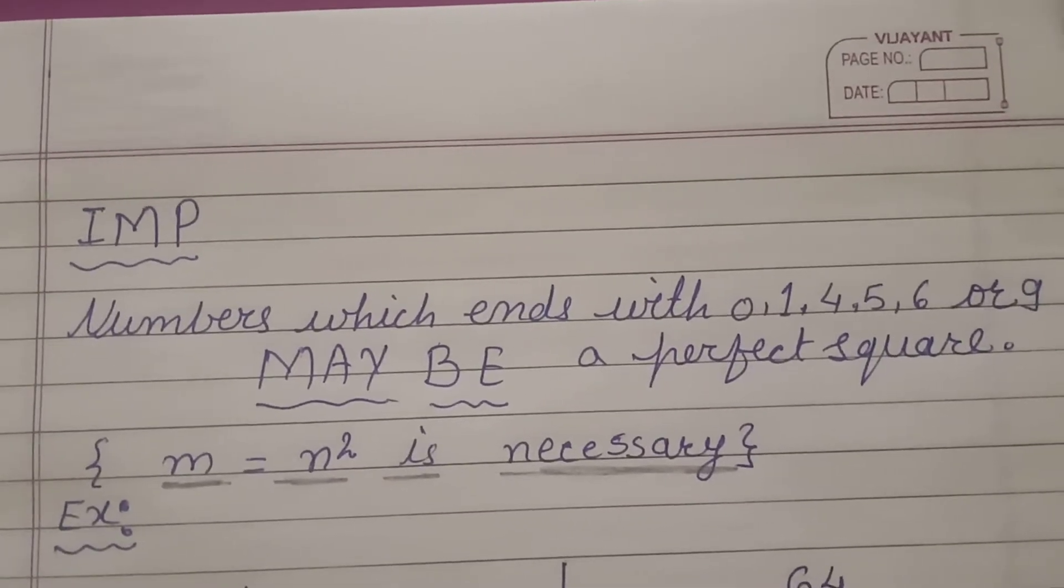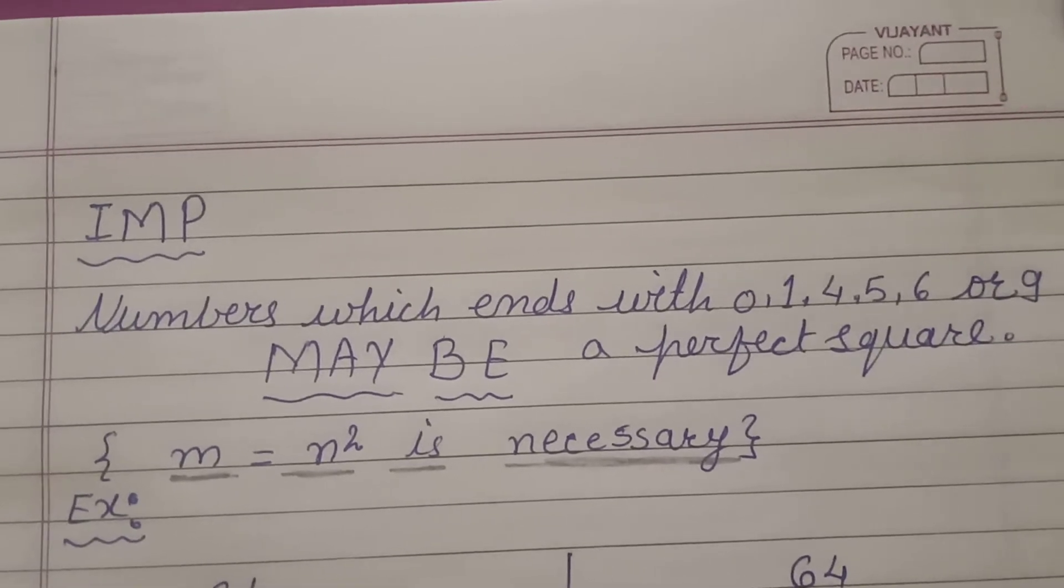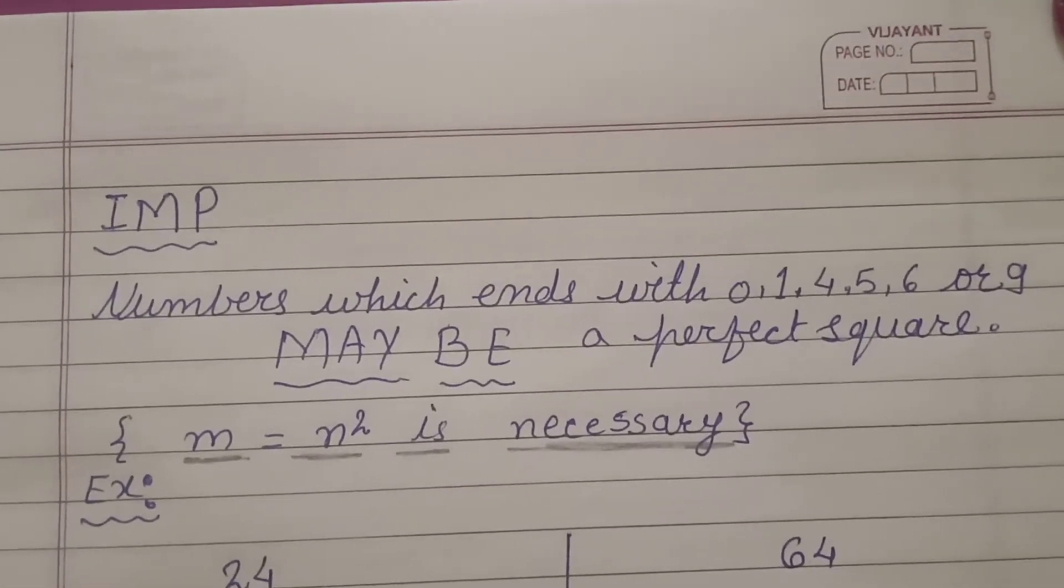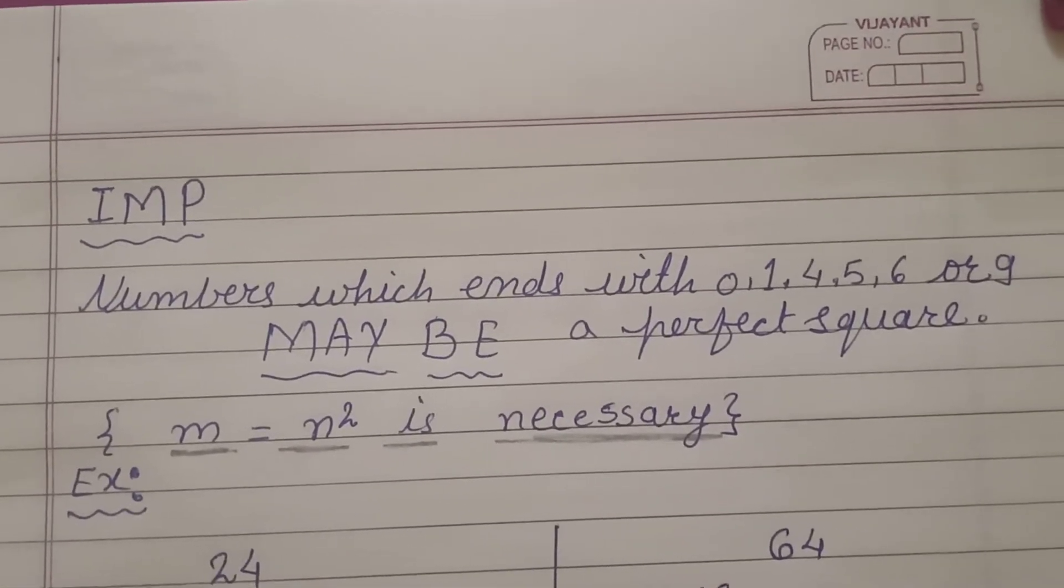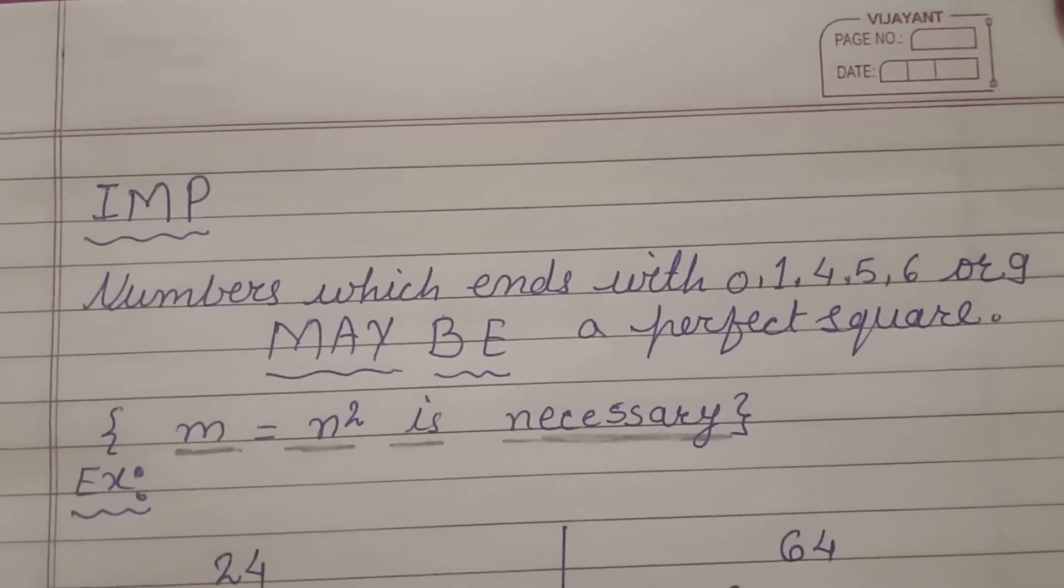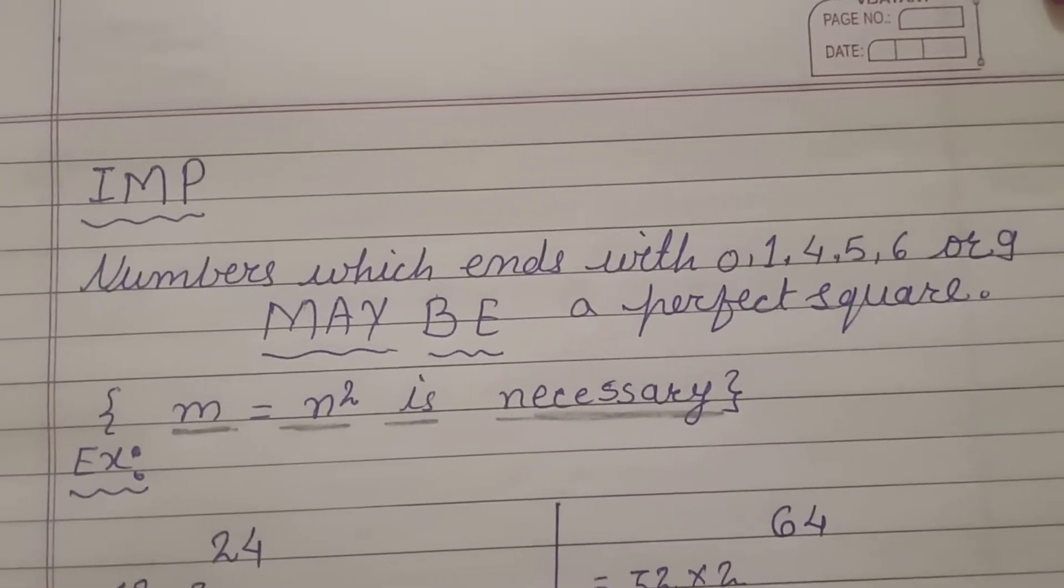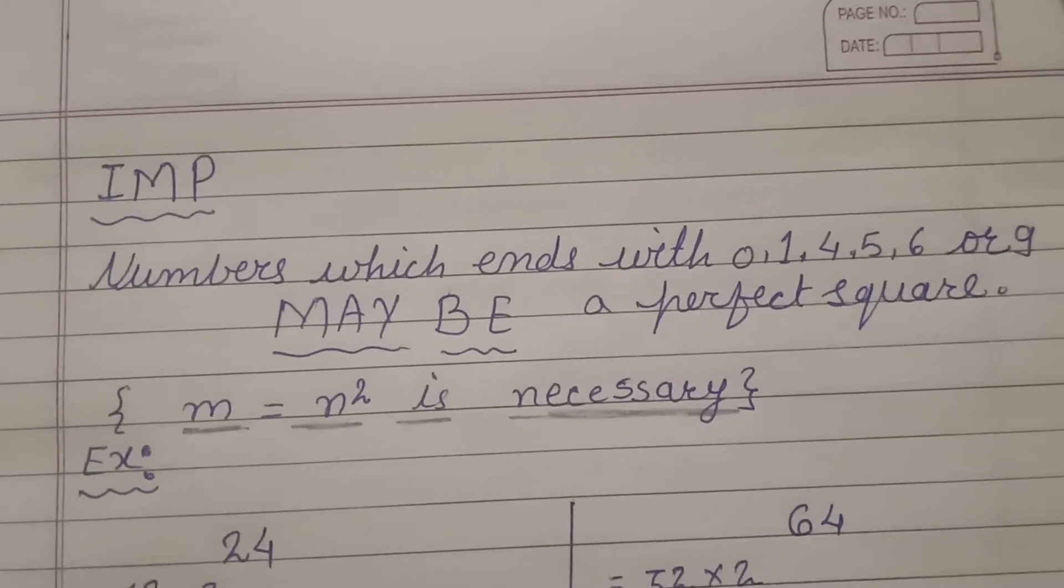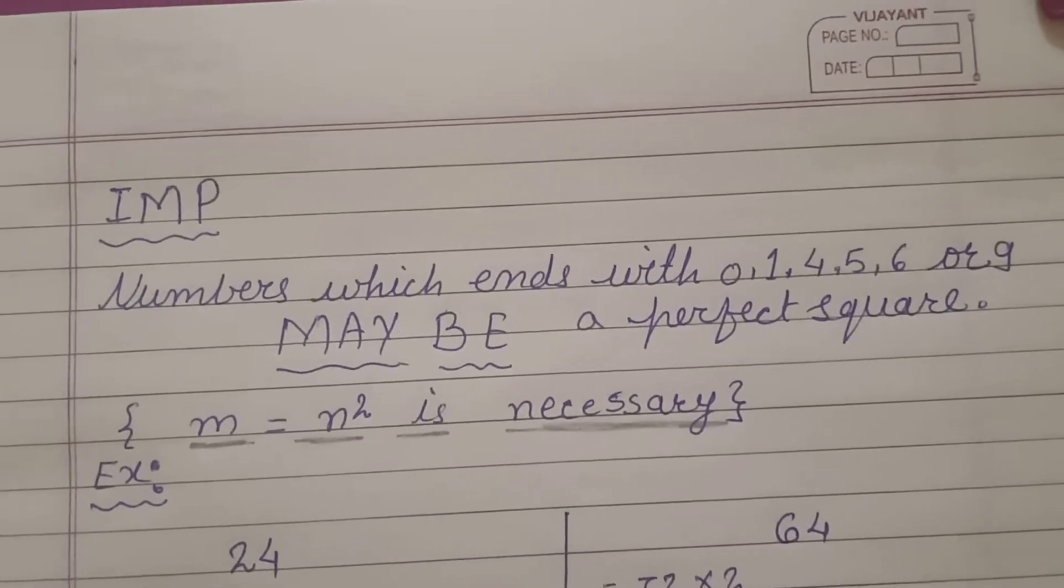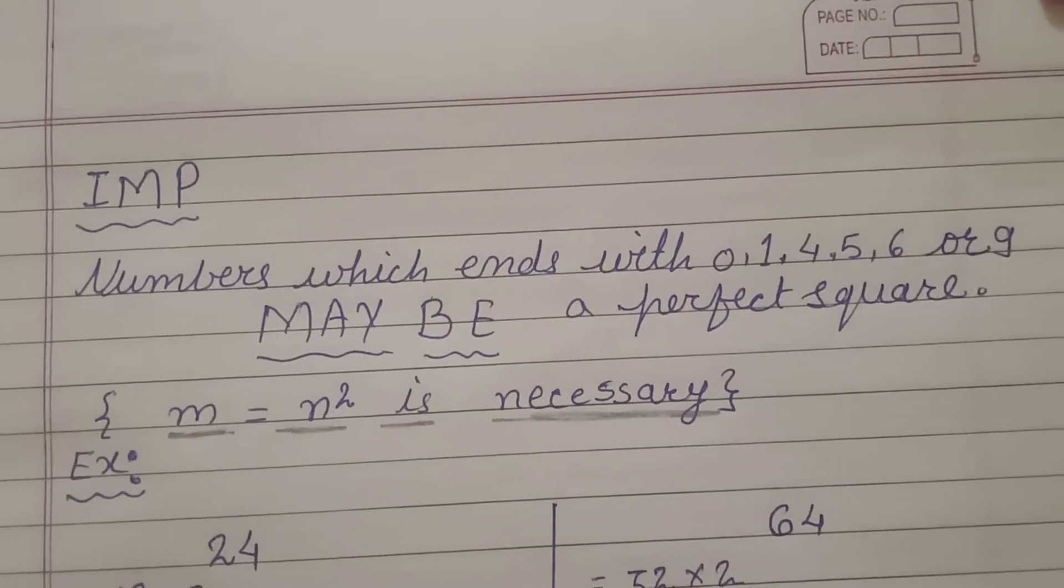We have seen that a perfect square number will always end with 0, 1, 4, 5, 6 or 9 but children it is not at all necessary that every number which ends with these digits should be a perfect square. Here I have written that the numbers which end with 0, 1, 4, 5, 6 or 9 may be a perfect square because to be a perfect square a very important condition is that it should be expressed as n squared.